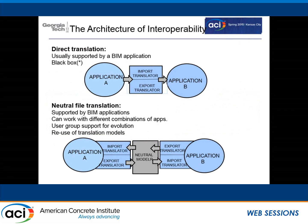When we talk about translation, we're really talking about migration of application data from one tool to another. The original way is a direct translation between, say, Tekla and Revit or similar applications. More recently, over the last 10 to 15 years, we've been looking at neutral file exchanges, where a neutral file sits in the middle and each application reads and writes to it. This opens it up so third-party groups can write those translators. The neutral file carries the common data needed between application A and application B.